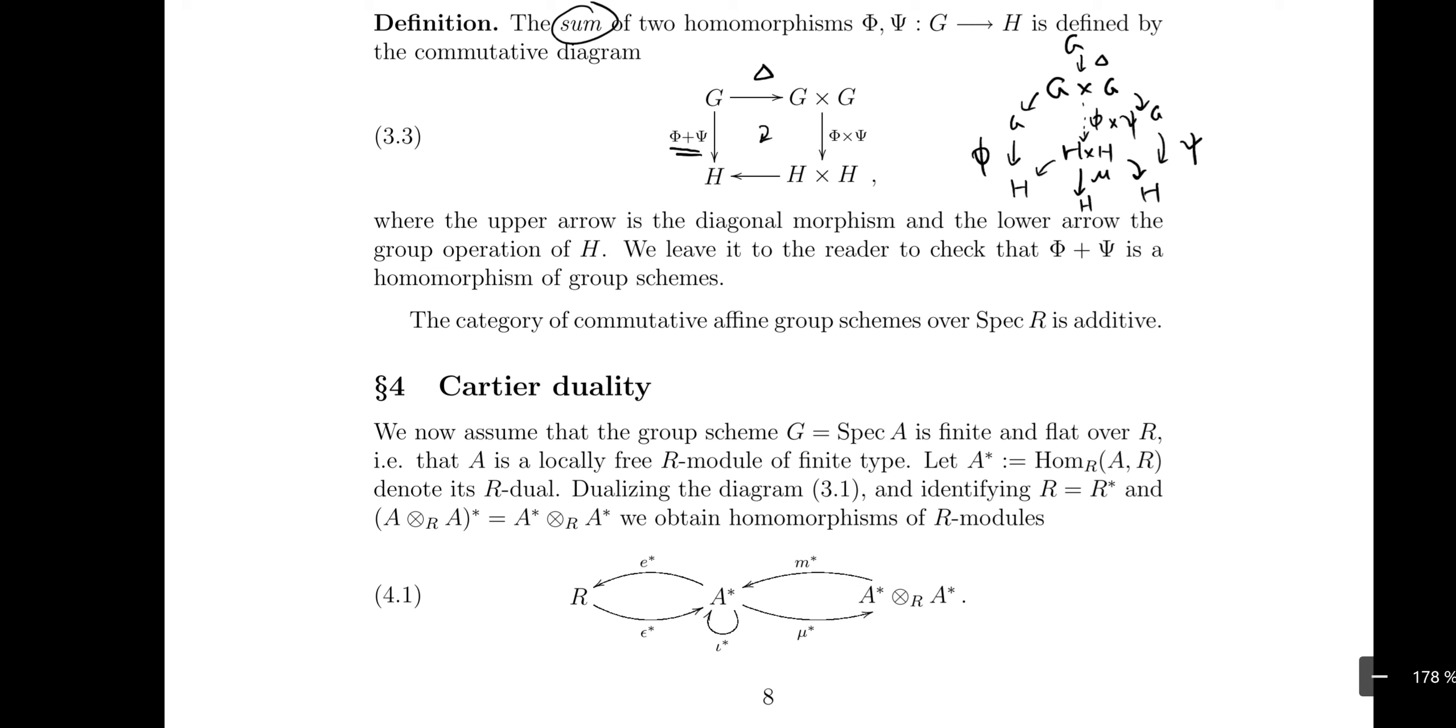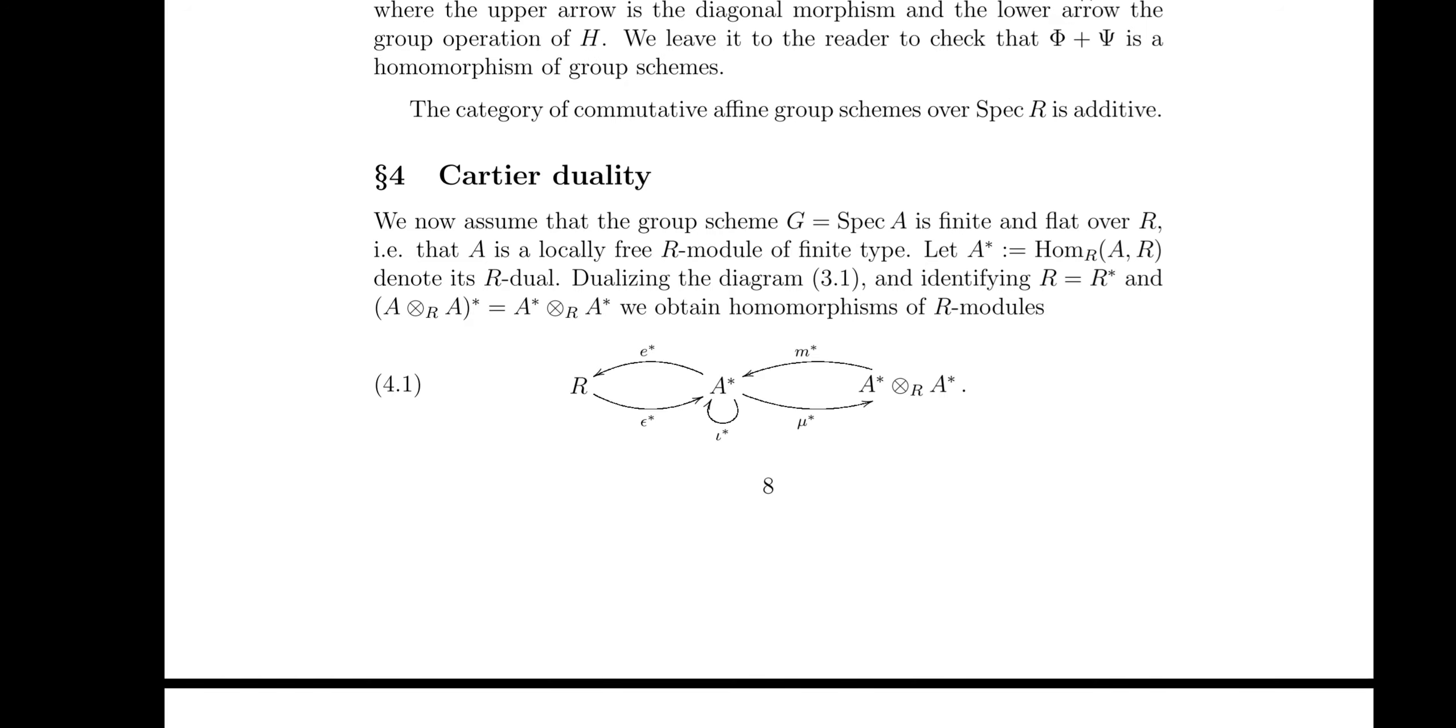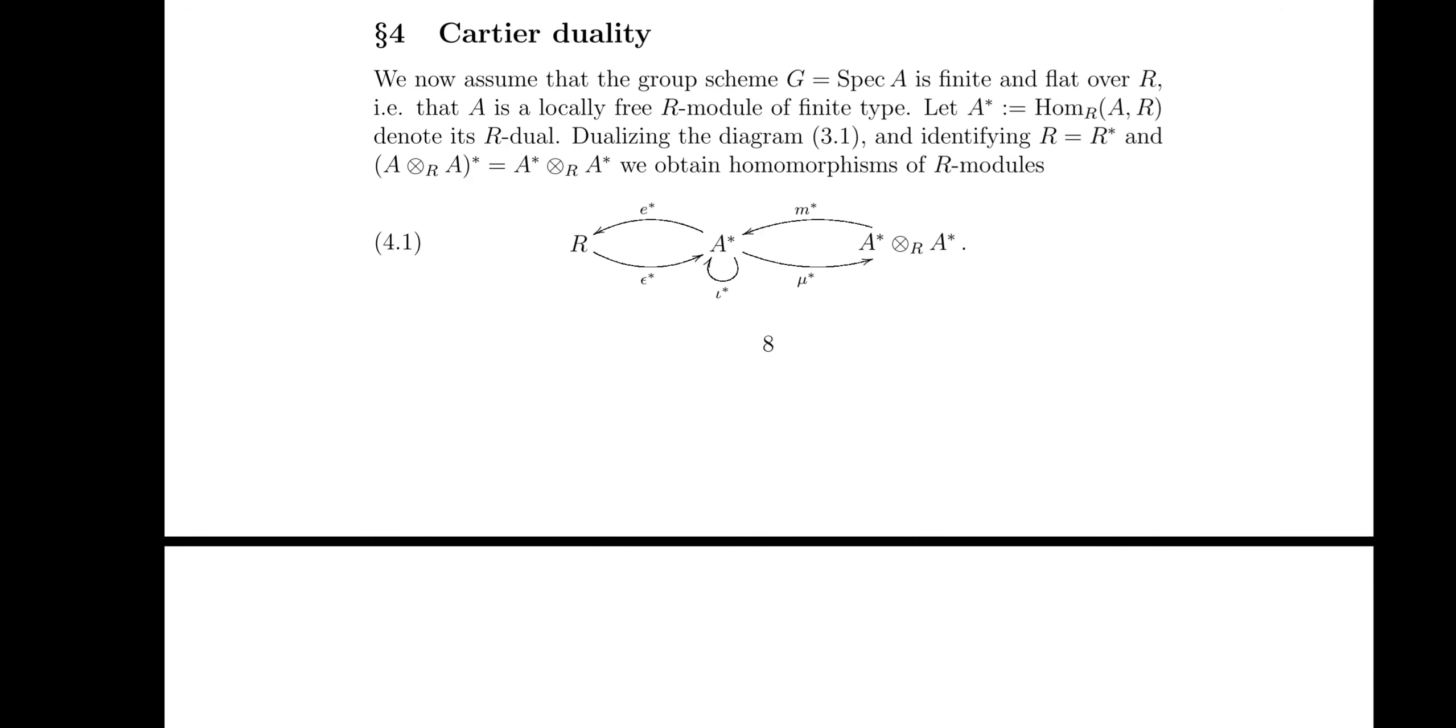The category of commutative affine group schemes over spec R is additive. Now we come to the Cartier duality, so surely Cartier is Pierre Cartier, c'est un mathématicien français, d'accord? Guy est un membre de l'association Bourbaki.